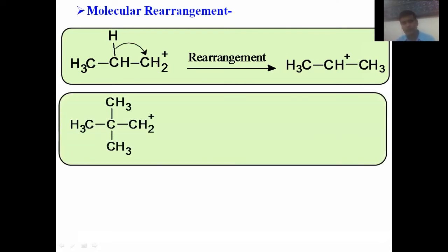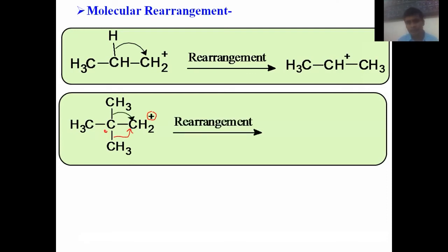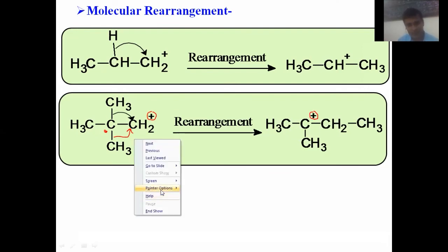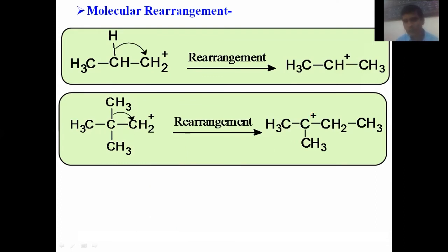Similarly, consider another primary carbocation where a methyl group can be shifted toward the positively charged (electron-deficient) carbon. This is a 1,2-methyl shift. That carbon then acquires a positive charge, and we get a more stable carbocation. This is an example of a 1,2-shift of a methyl group, giving a more stable carbocation.